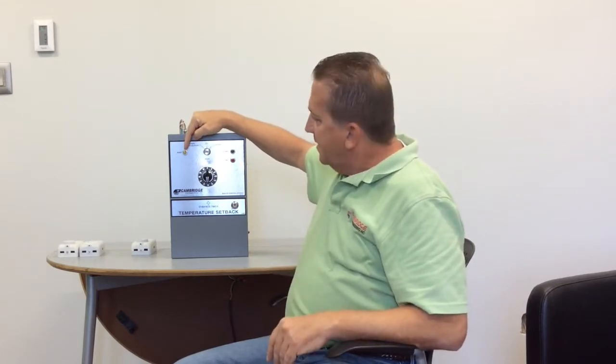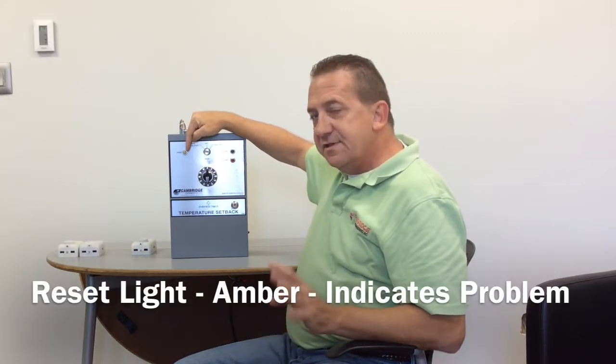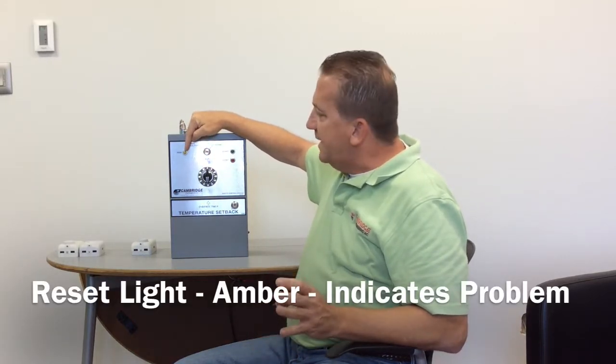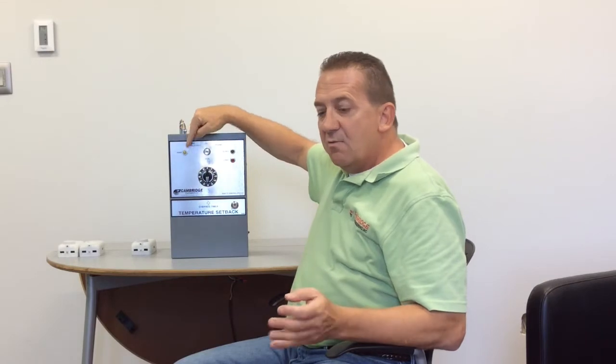First we have the reset light. It's a yellow amber colored light. If this light would ever be illuminated, that would mean that there is a problem with the system, whether it didn't fire or there's an issue with one of the components.